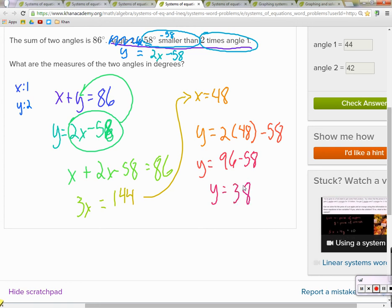So what's it asking for? Angle 1. Which one of these is angle 1? X. X, because that's what we said over here, or remembered in our heads. So that's 48, and angle 2 is 38.